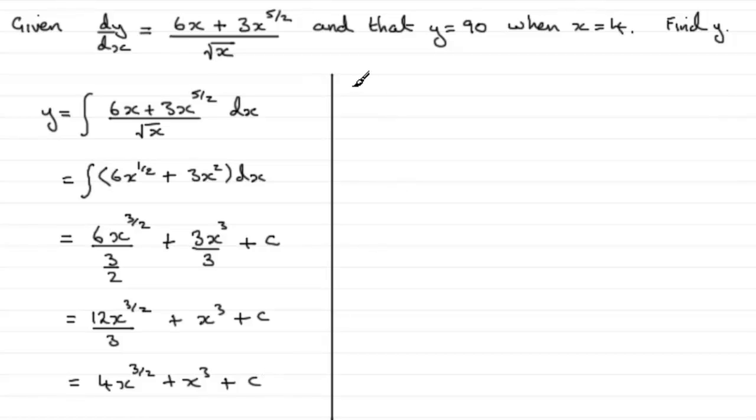So let's just say that when x equals 4, y equals 90. And if we substitute that in, in place of the y, we'd write 90 then. 90 equals 4 multiplied by x, which is 4, to the power 3 over 2. And then plus x cubed, so that's plus 4 cubed. And then plus c.